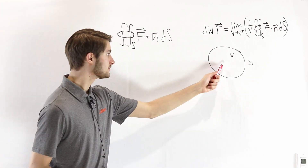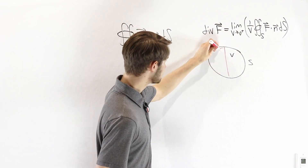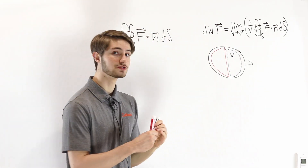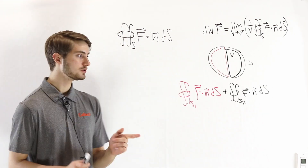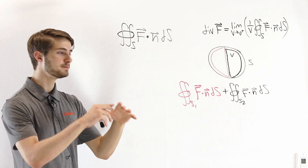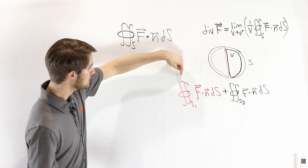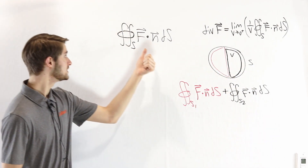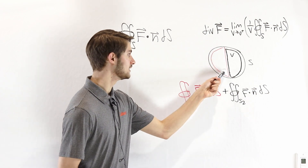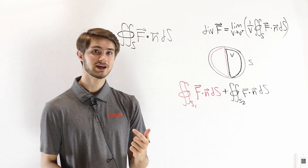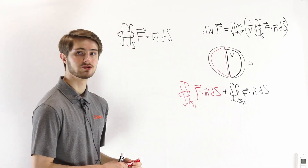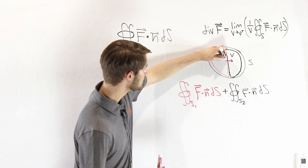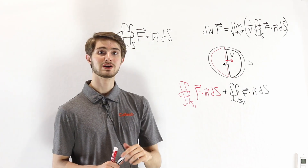What we're going to do now is split this volume into two different parts — one component over here and one over here. We take the surface integral over each of these surfaces, so we're now looking at the surface integrals over two different surfaces that combine to enclose the entire volume V. Because we chose the normal vector to always be oriented outward, on the left side with this red surface S1, the normal vector in the middle points in one direction. With the surface on the right S2, the normal vector points in the opposite direction.